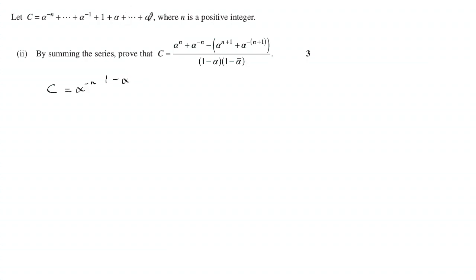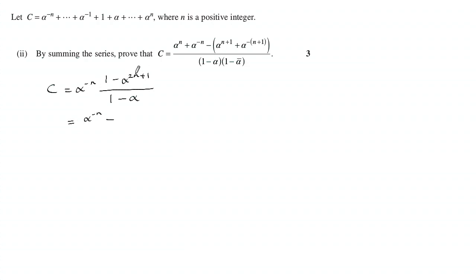There are n terms there and n terms there plus that one, so 2n plus one total terms, and then you divide by one minus the constant ratio. We have to show that equals the target expression, so let's bring that into the numerator and expand. Alpha to the minus n times that gives alpha to the negative n, and then that times that gives alpha to the n plus one.